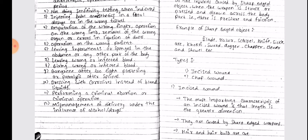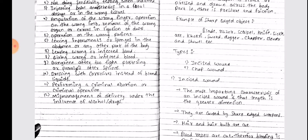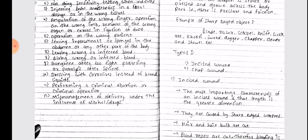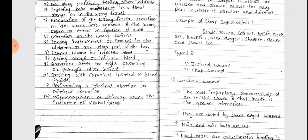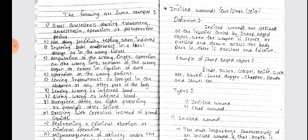Operations on the wrong patient; leaving instruments or sponges in the abdomen or any other part of the body; leaving wrong or infected blood; gangrene after too tight plastering or paralysis after splints; dressing with corrosives instead of bland liquids; performing a criminal abortion or criminal operation; mismanagement of delivery under the influence of alcohol and drugs.